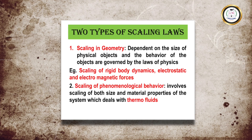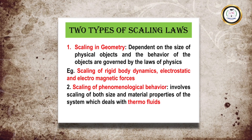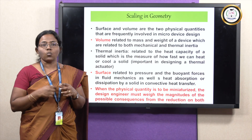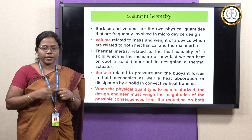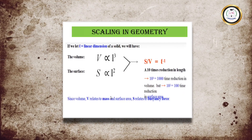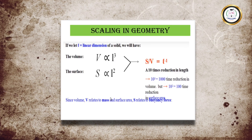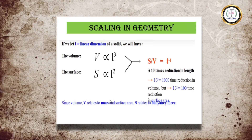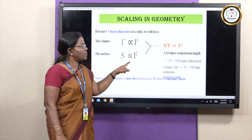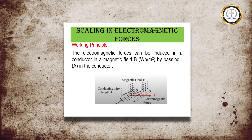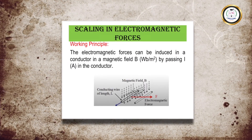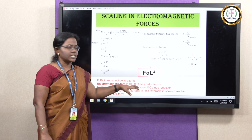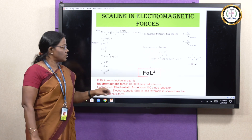Scaling of phenomenological behavior is reducing the size along with the material properties. While scaling, the volume as well as surface area will also be reduced. For example, if the length value is reduced by 10 times, the volume is reduced by 1000 times and the surface area is reduced by 100 times. This is one example of scaling in geometry. While considering electromotive force, force is proportional to L to the power 4. If L is reduced by 10 times, then the force is reduced by 10,000 times.